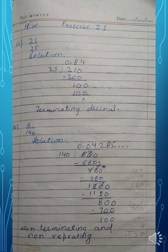21 over 25. We have 21 divided by 25. Since 25 is the greater number and 21 is smaller, we put a decimal point. 25 goes into 210 — 8 times gives 200. Remainder is 10, bring down 0 to get 100. 25 goes into 100 four times exactly, giving 0.84. This is a terminating decimal.